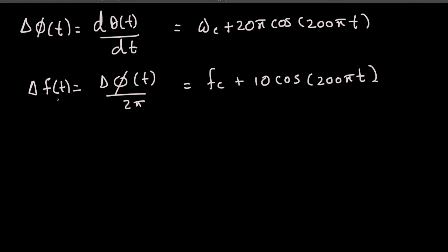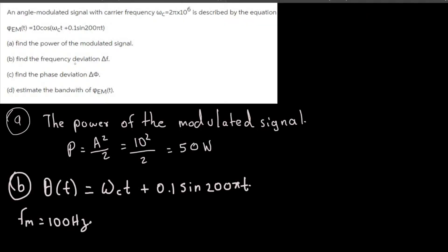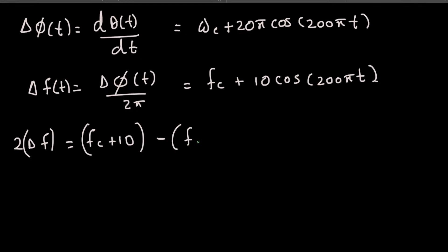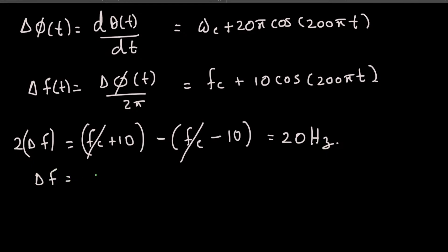From Δf(t) = f_c + 10·cos(205t), the maximum frequency is f_c + 10 and the minimum is f_c − 10. The total frequency swing is 2Δf = (f_c + 10) − (f_c − 10) = 20 Hz. Therefore Δf = 10 Hz.